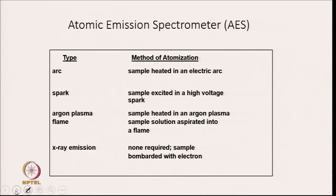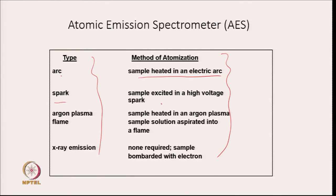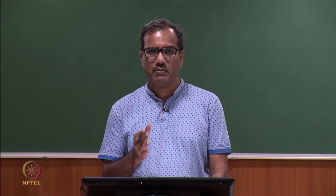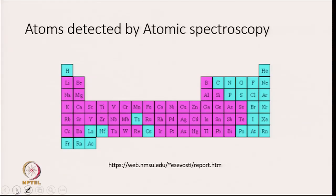The second kind of spectroscopy based on atomic spectroscopy is atomic emission spectrometry, which has different types based on method of atomization. In the arc type, the sample is heated in an electric arc. In the spark type, the sample is excited in a high-voltage spark. In the argon plasma type, the sample is heated in an argon plasma with the sample solution aspirated into the flame. In X-ray emission, the sample is bombarded with electrons. Flame photometry, atomic absorption spectroscopy, and atomic emission spectroscopy all help us detect atoms, and a large range of atoms can be detected.